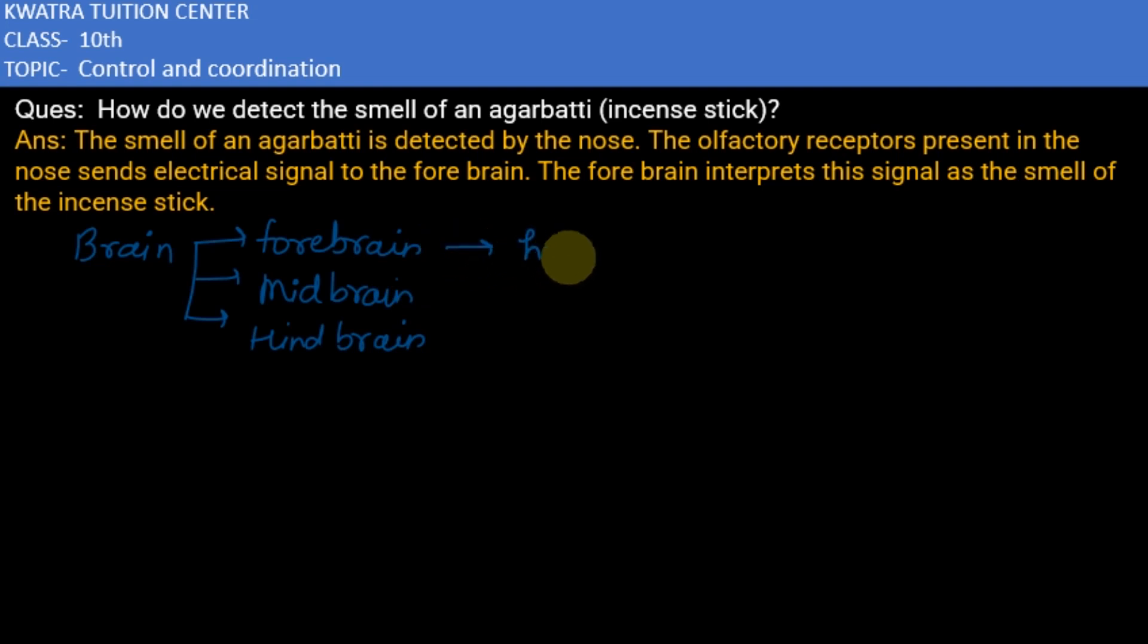The forebrain is specialized for hearing, smelling, sight, touch, and taste. So we can detect all of these by our forebrain.